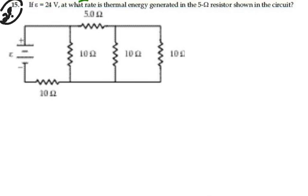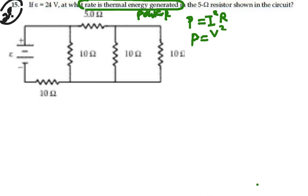If we're talking about rate of thermal energy generated, we are thinking of power. In particular, if we're talking about a resistor, power would be I squared R or power would be voltage squared divided by R. So we're looking for one of these two things. We need to find the current through that resistor or the voltage across that resistor so that we can employ one of these formulas.